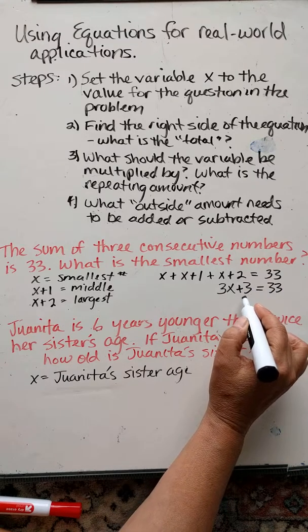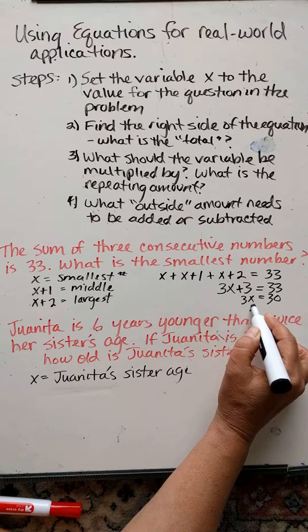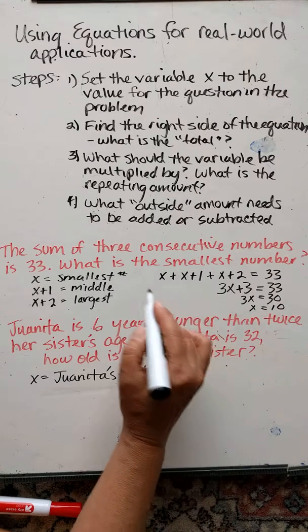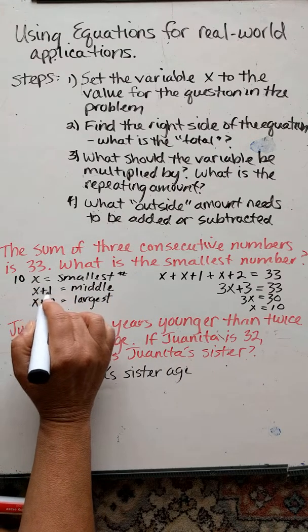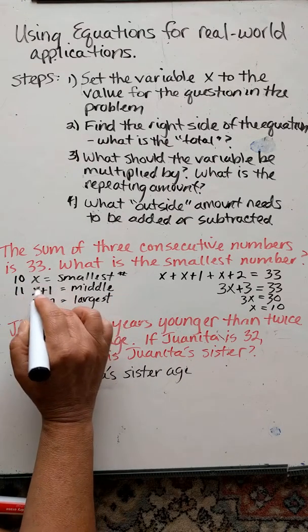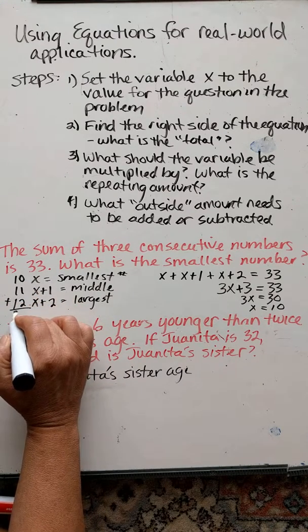Subtract 3 from both sides, I get 3x equals 30. Divide both sides by 3, I get x equals 10. So the consecutive numbers would be 10, 10 plus 1 is 11, and then 10 plus 2 is 12. And if I add these up, I will definitely get 33.